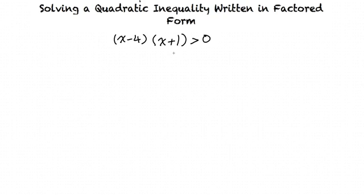So this isn't like solving a normal inequality? Not exactly, because with this inequality we cannot simply separate each factor as in a normal equality. We cannot simply solve each factor and write x is greater than 4 and x is greater than negative 1 for our solution.